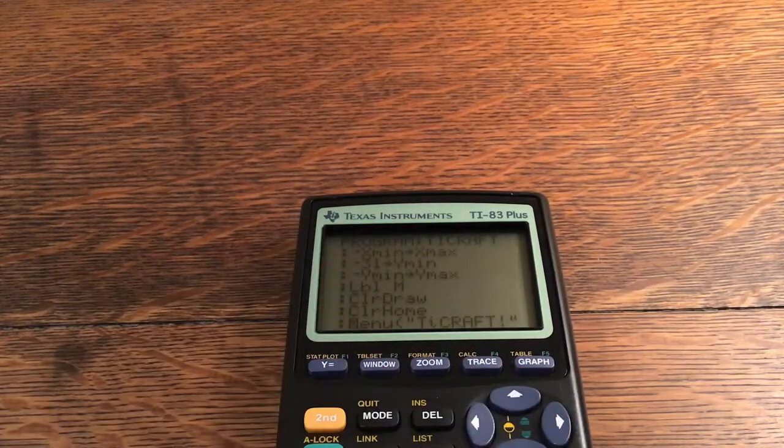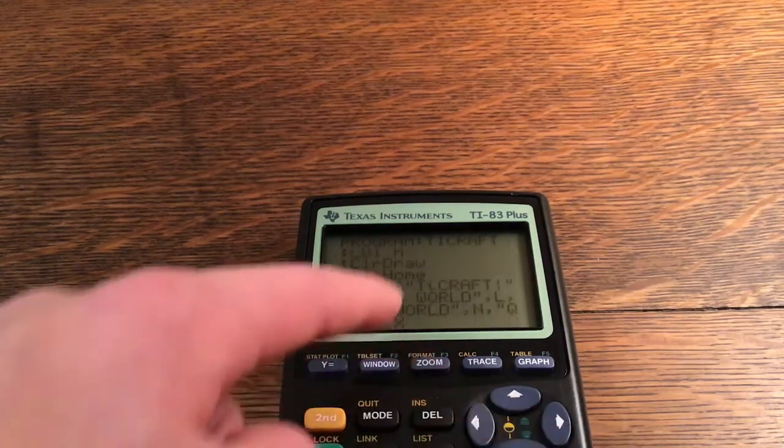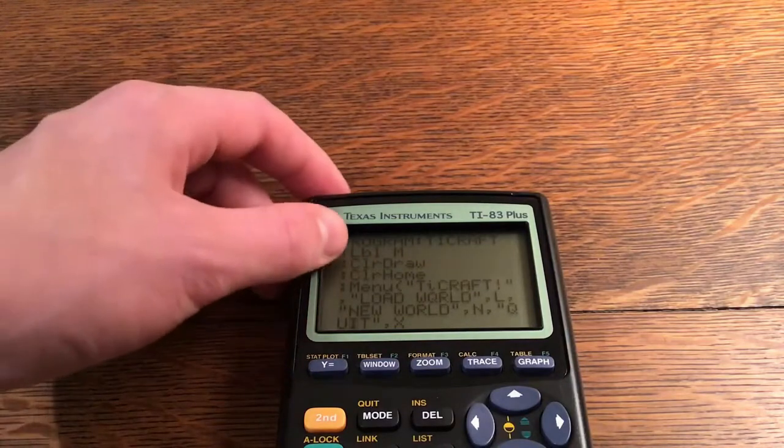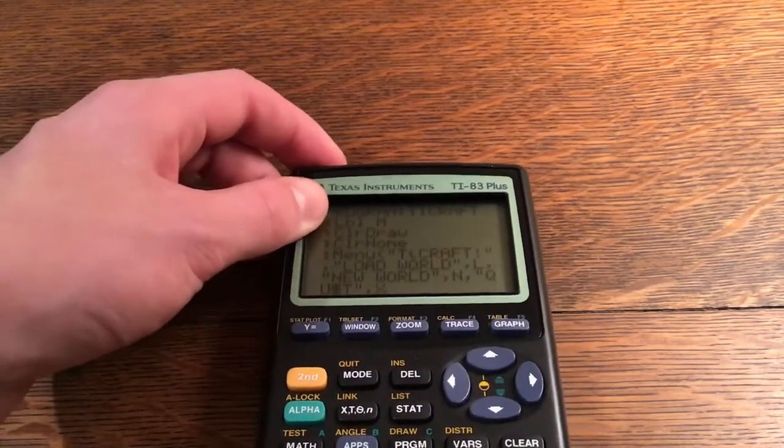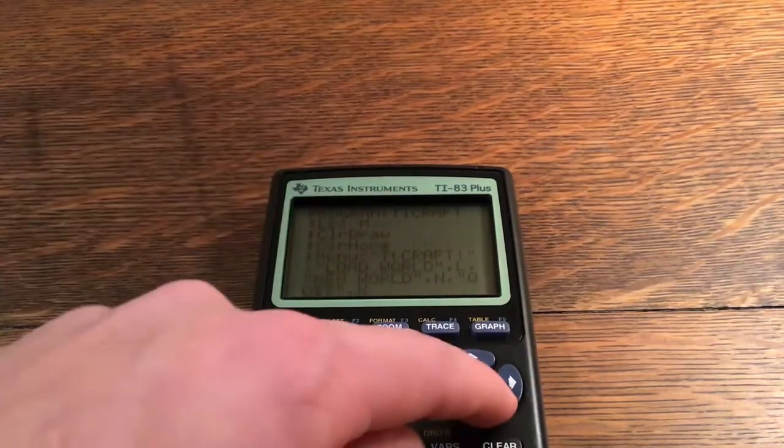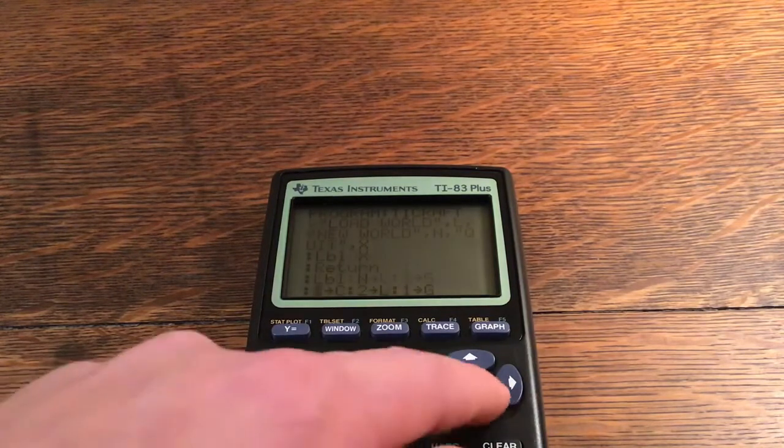Axes off, -47 storing to Xmin, -Xmin storing to Xmax, 31 storing to Ymin, -Ymin storing to Ymax. Label M, Clear Draw, Clear Home, menu quote TI Craft. Load world comma L, New world comma N, Quit comma X. Label X, Return.